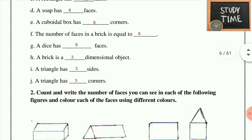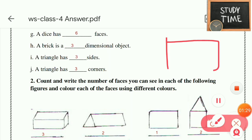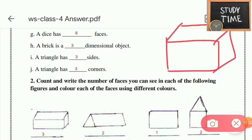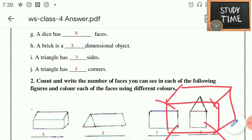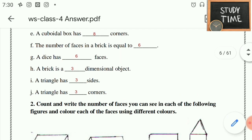A cuboidal box has 8 corners. Same way — it is like a brick. You will be having 8: 1, 2, 3, 4, and backside 4 — so 8 corners.